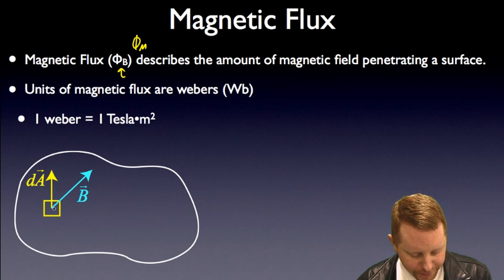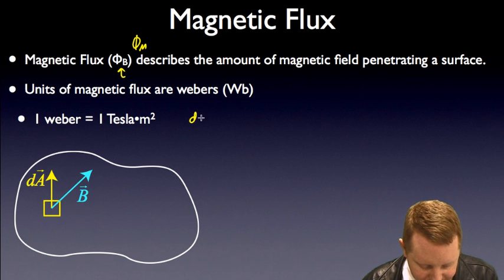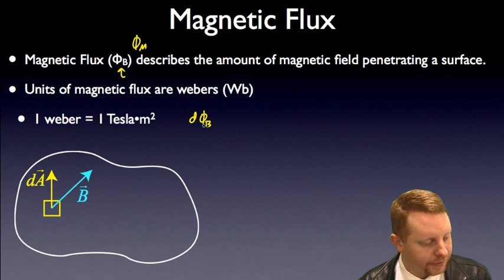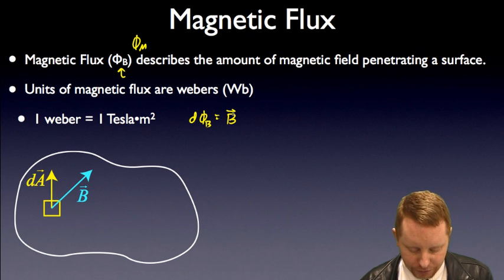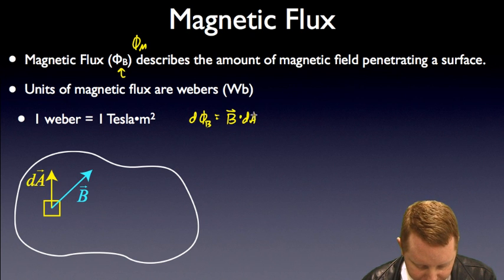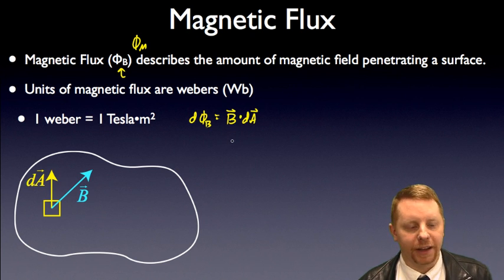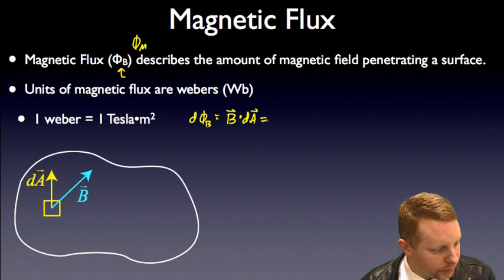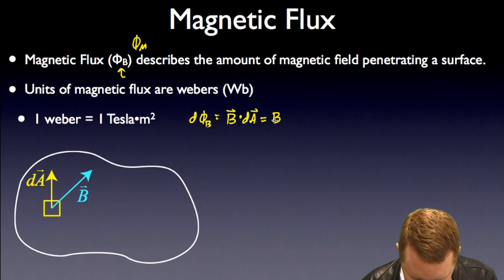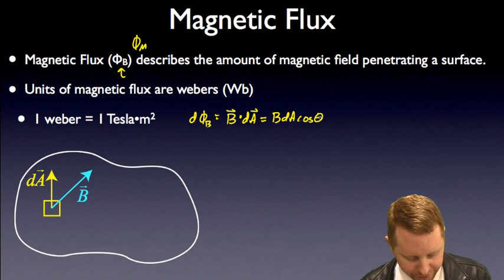In that case, the little bit of magnetic flux going through that section of our open surface, dφ_B, is going to be the magnetic field dotted with that little differential of area, dA, which when we do this is just going to be B times dA cosine of the angle between them.